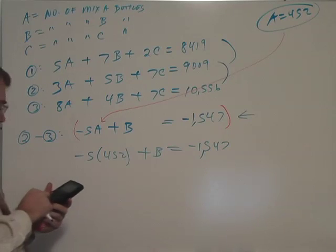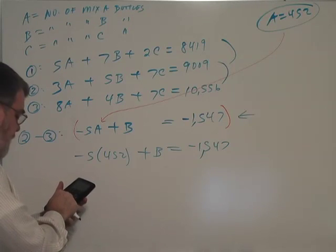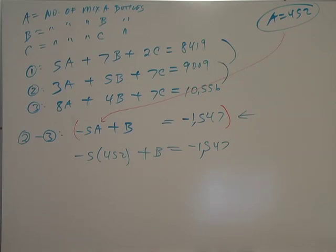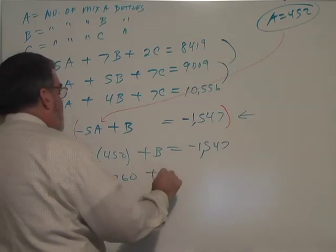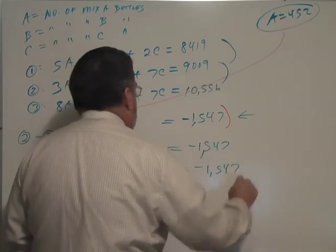I don't know what that is, times negative 5 is minus 2,260. Minus 2,260 plus B equals to minus 1,547.